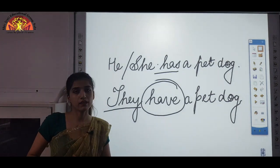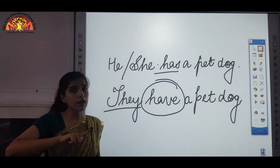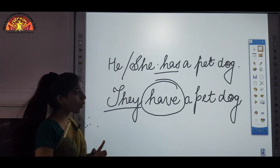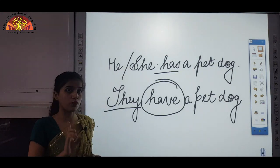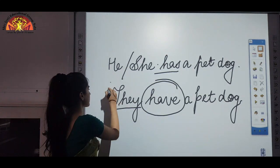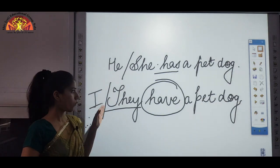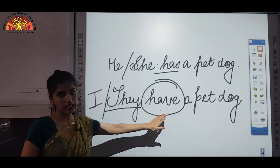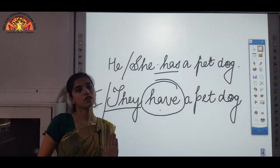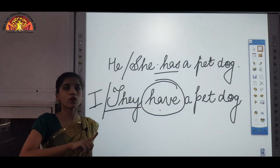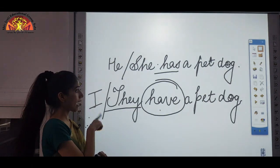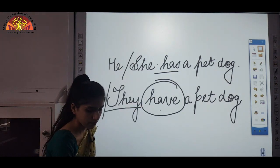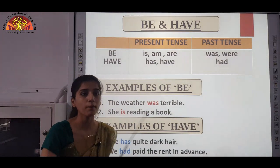Remember: in the be form of the verb, we use I with 'am,' but in the have form of the verb, we use I with 'have.' These were the be form and have form of the verb.